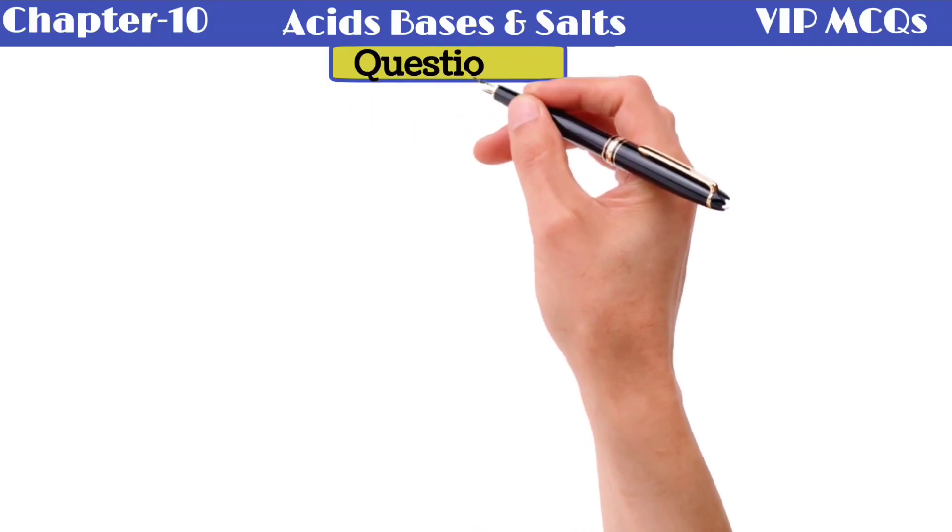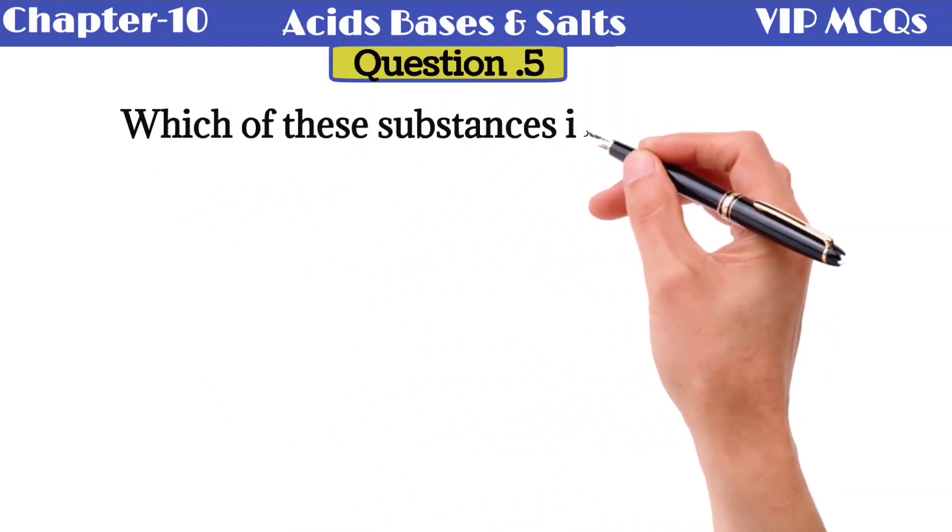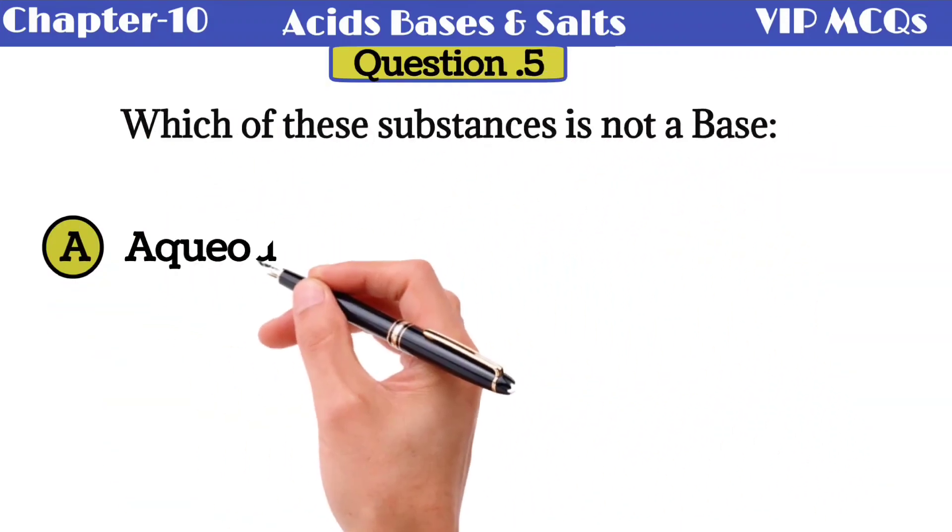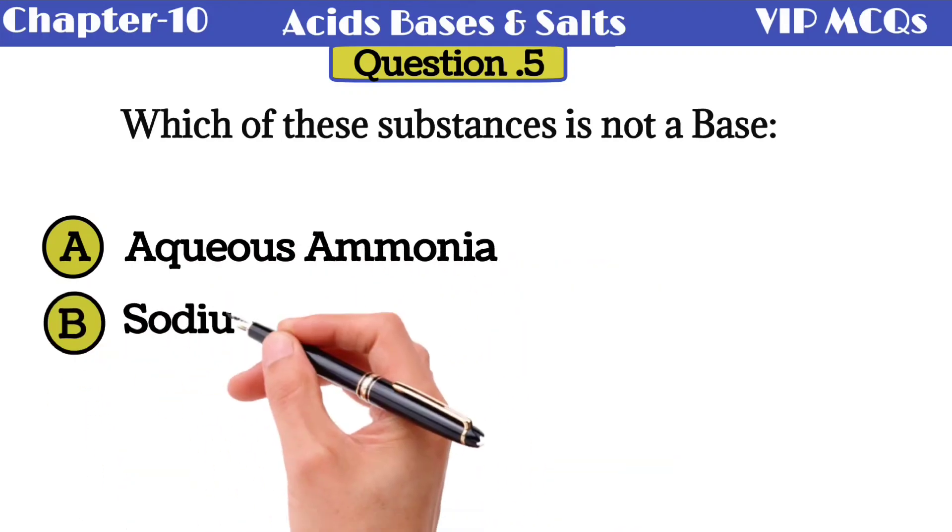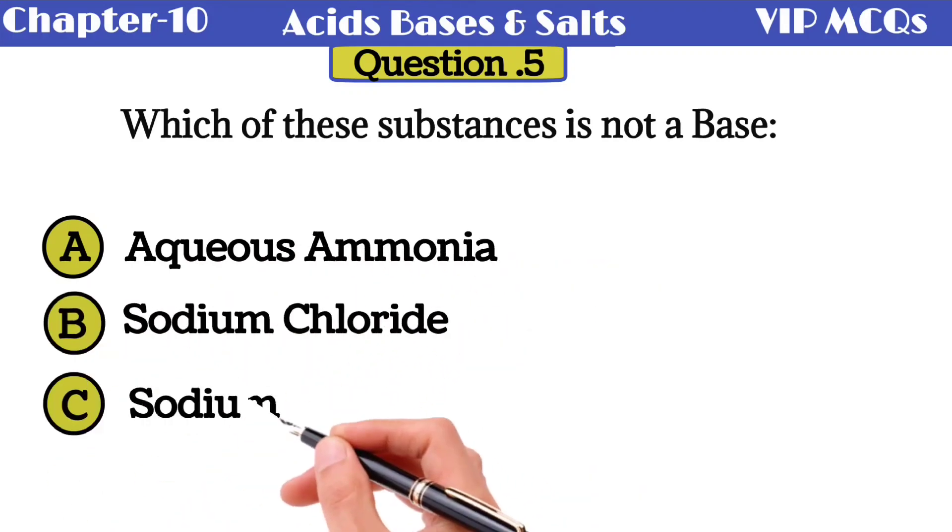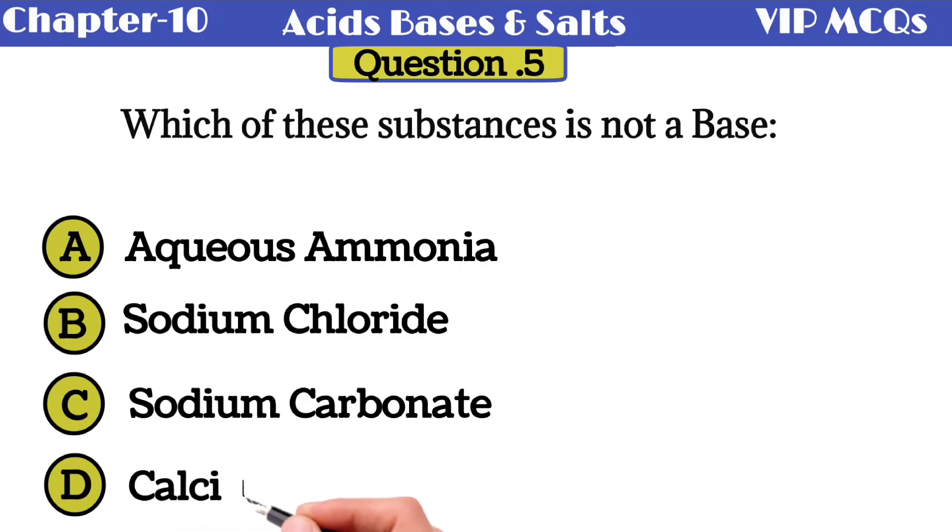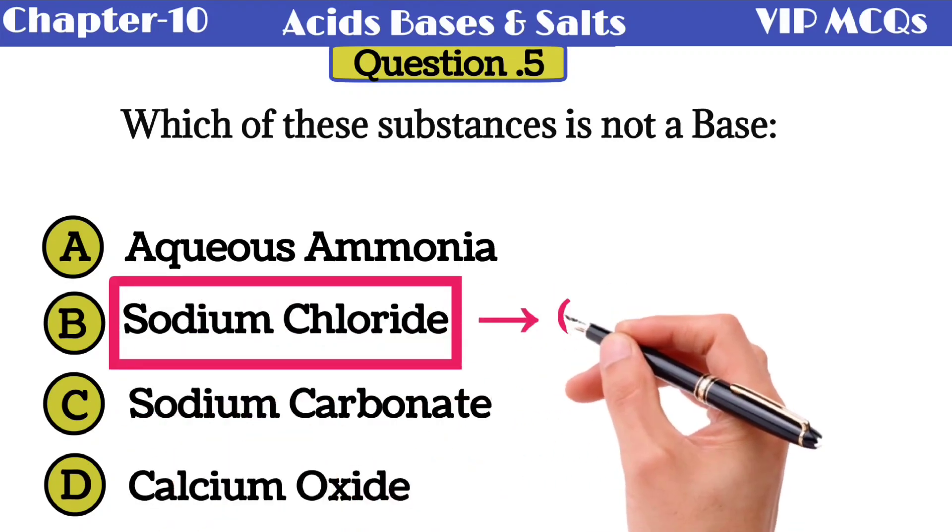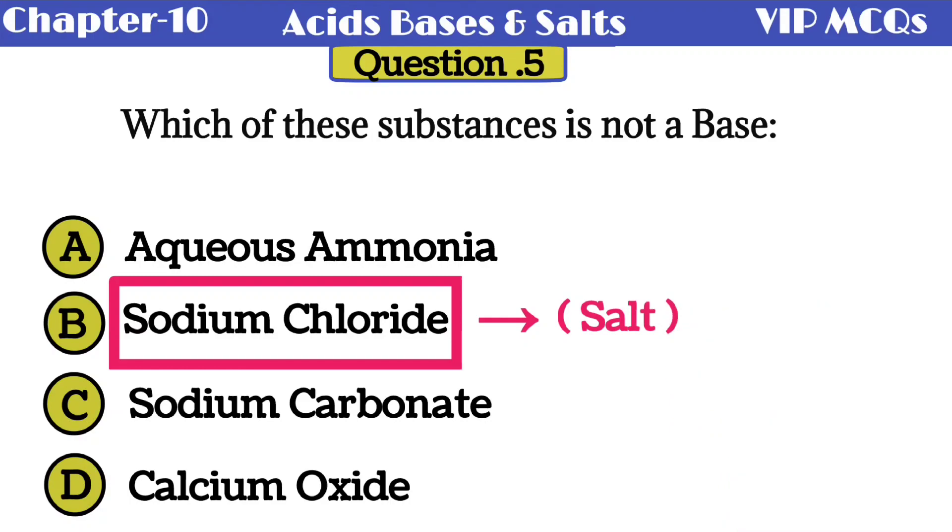Question number 5: which of these substances is not a base? Option A is aqueous ammonia, option B is sodium chloride, option C is sodium carbonate, option D is calcium oxide. The correct option is sodium chloride, which is a salt. All other substances are bases.